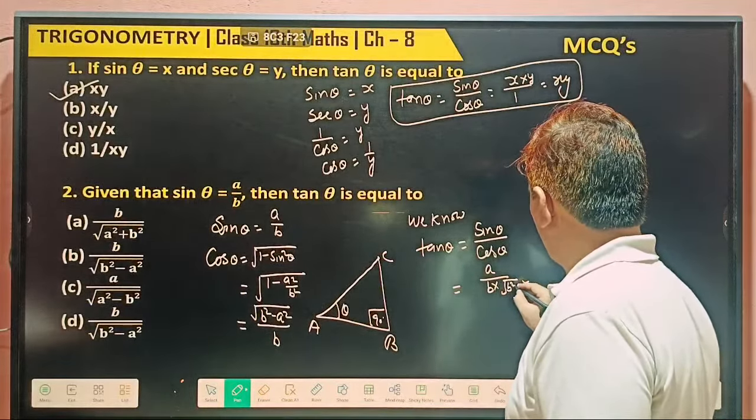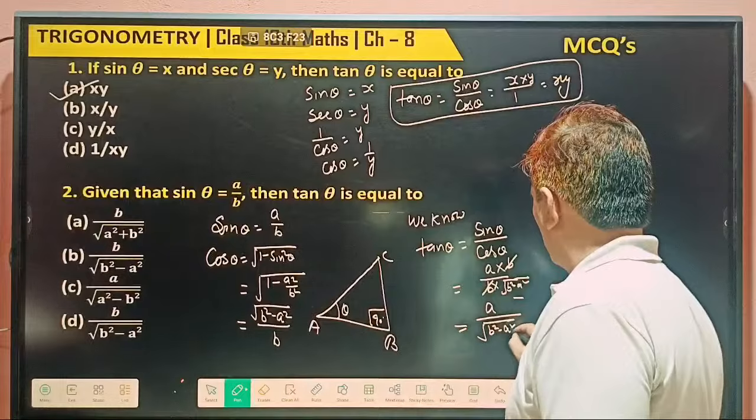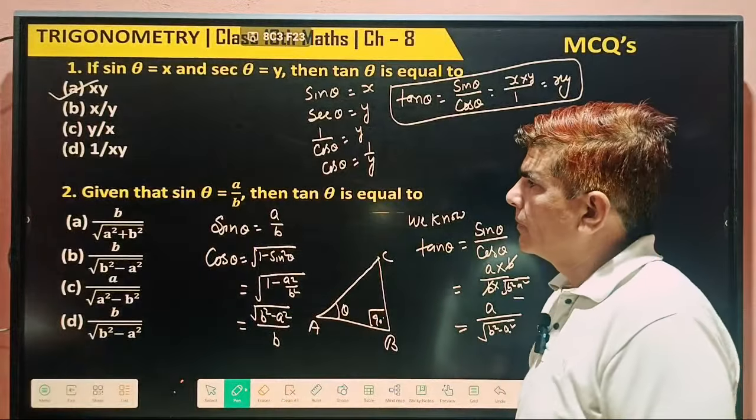B square minus a square into b. B cancels. So what's this? a by under the root b square minus a square. Anywhere?